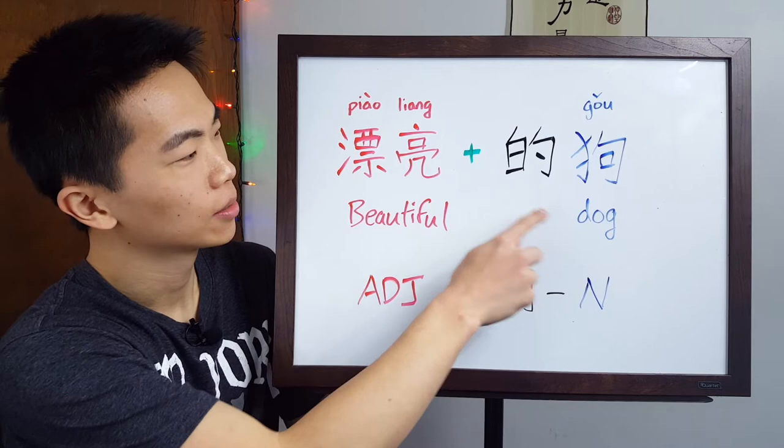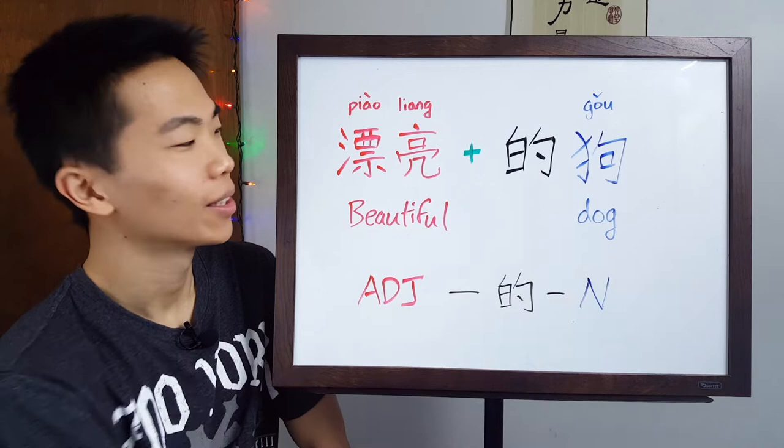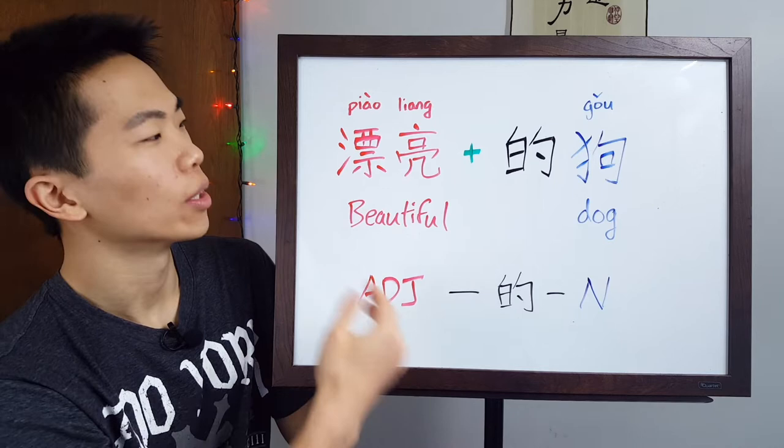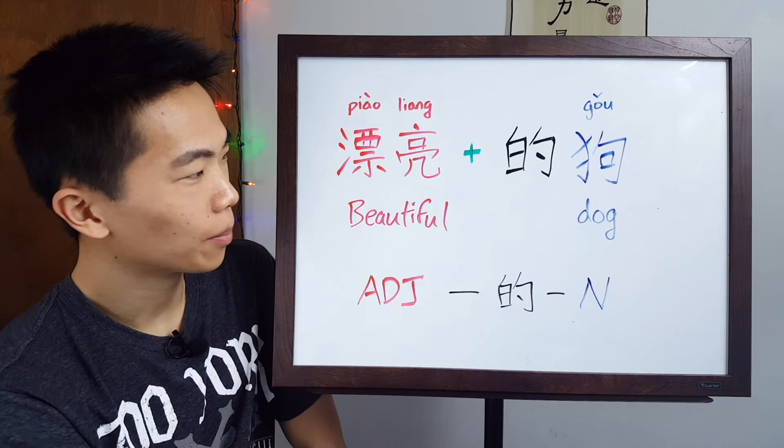漂亮 (beautiful) 的 狗 (dog) — the beautiful dog. You could also change it out for anything: 漂亮的猫, the beautiful cat. Or you could say 黑色的狗, the black dog, or the black cat.